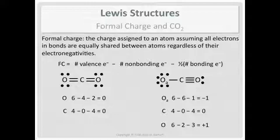Comparing the two structures: the double-double bond structure has all formal charges equal to zero. The triple-single bond structure has charges of negative one, zero, and positive one. Your first criterion when comparing Lewis structures is to prefer the one with more formal charges equal to zero. The double-double bond structure is the better Lewis structure — that's why we do two double bonds instead of a single bond and a triple bond.